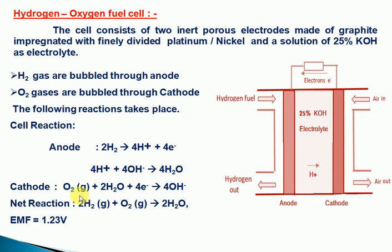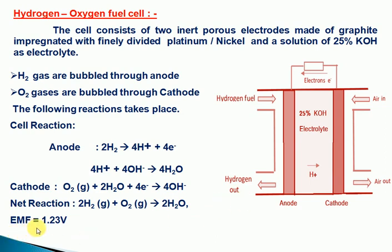At the cathode, if you take 4 electrons with oxygen, you generate 4OH⁻. Taking the net reaction: 2H₂ + O₂ produces water and electrical energy. Taking 1.23V per cell, cells are connected in series to form a fuel cell battery.